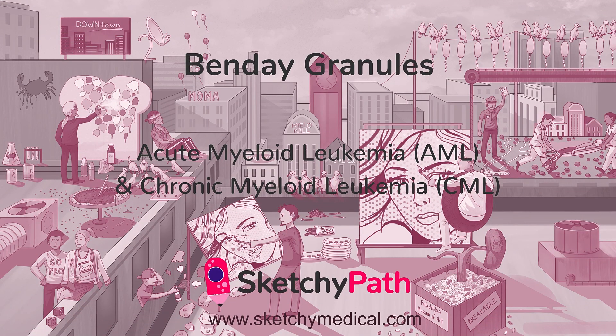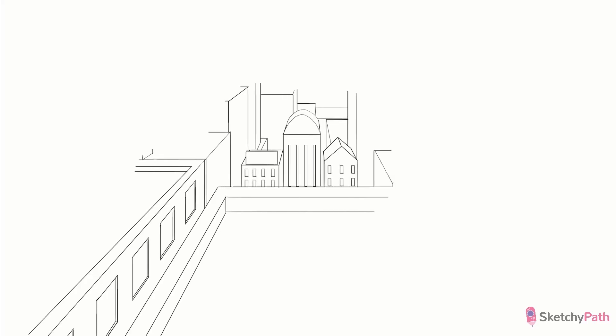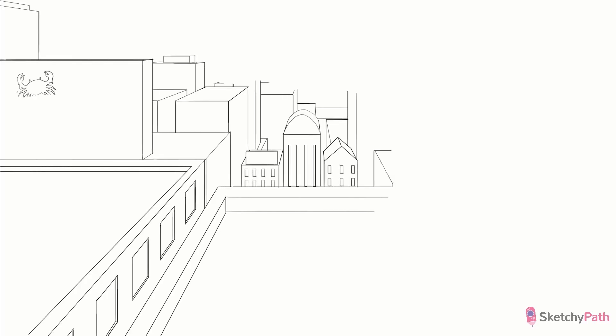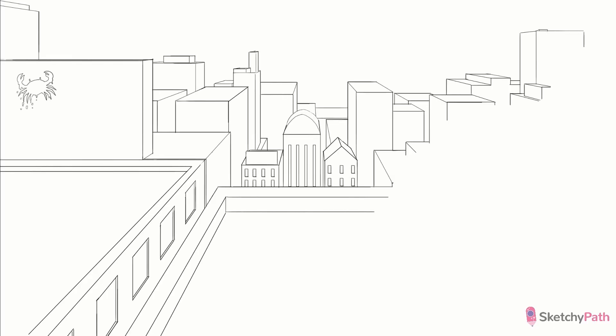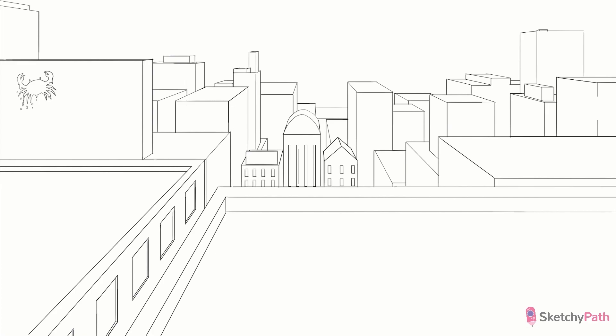As we introduced at the Museum of Myeloid Art, the myeloid neoplasms are cancers that derive from myeloid progenitor cells. These are stem cells that give rise to the myeloid cell lineage, which includes red blood cells, platelets, monocytes, and granulocytes, such as neutrophils, eosinophils, and basophils.